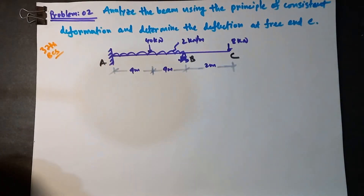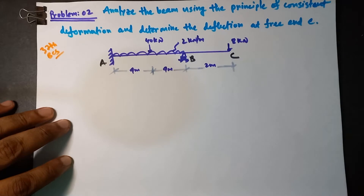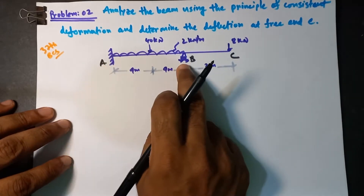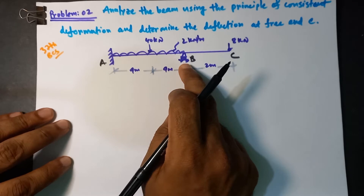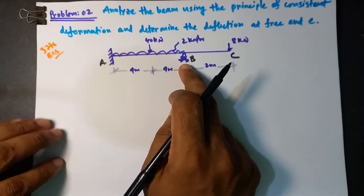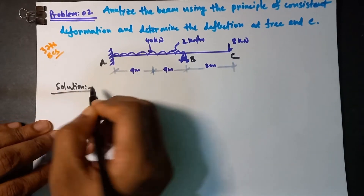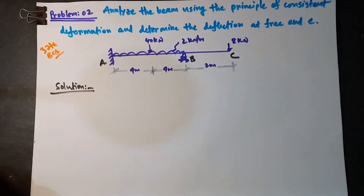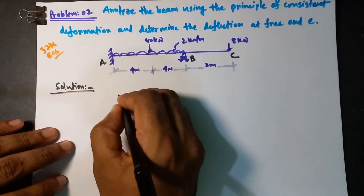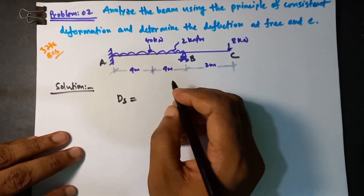We are going to use the first portion. We are going to use the indeterminate beam. Definitely, we are going to use the 3rd step. We are going to use the 4th step, and we are going to use the equation of equilibrium. This is the 3rd step. We are going to use the result.